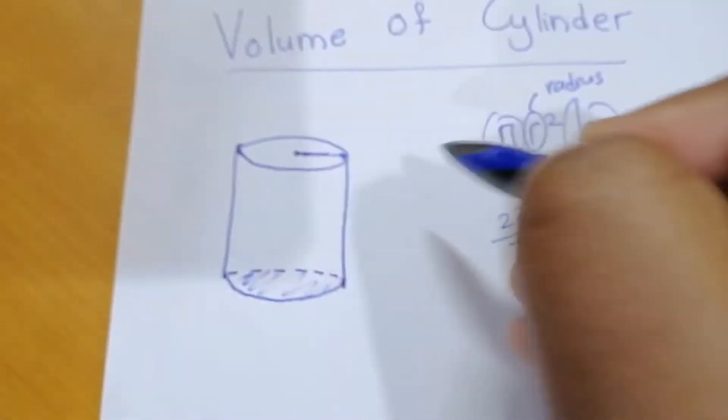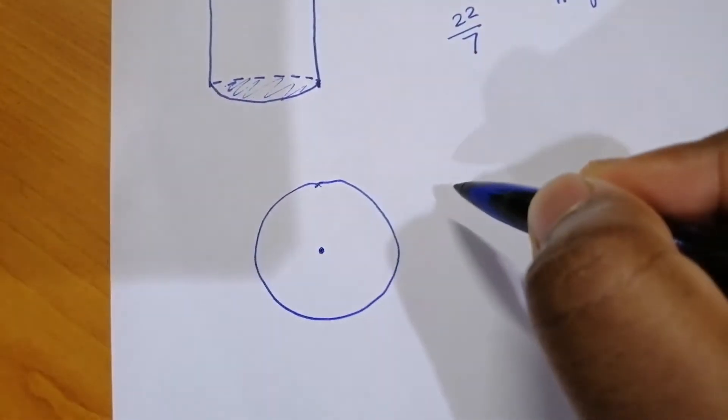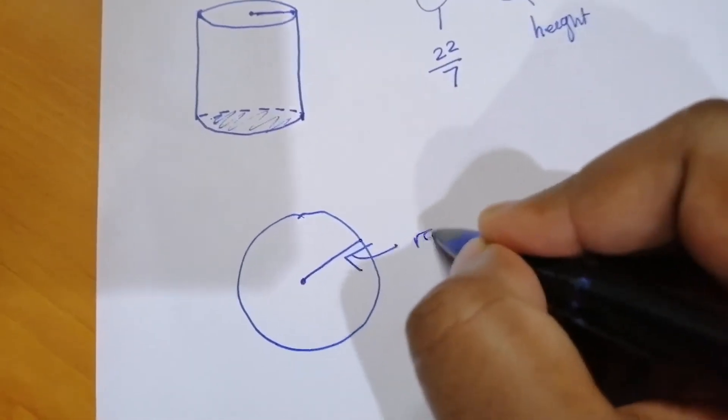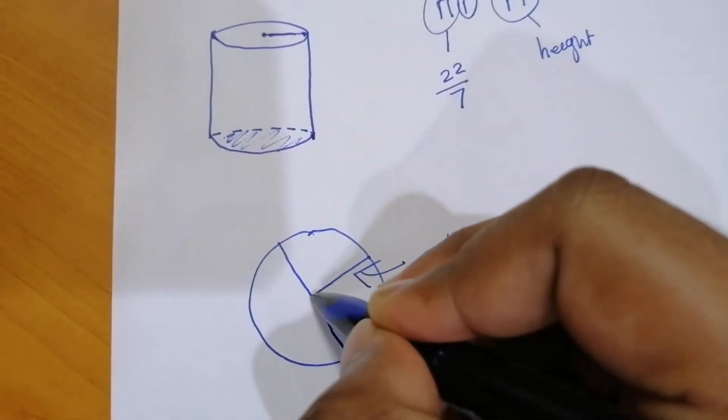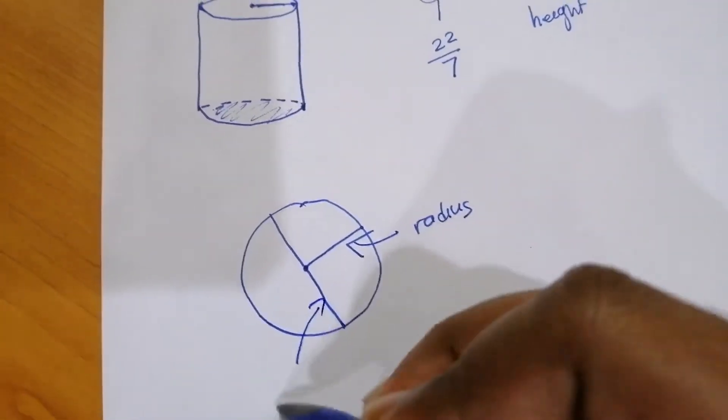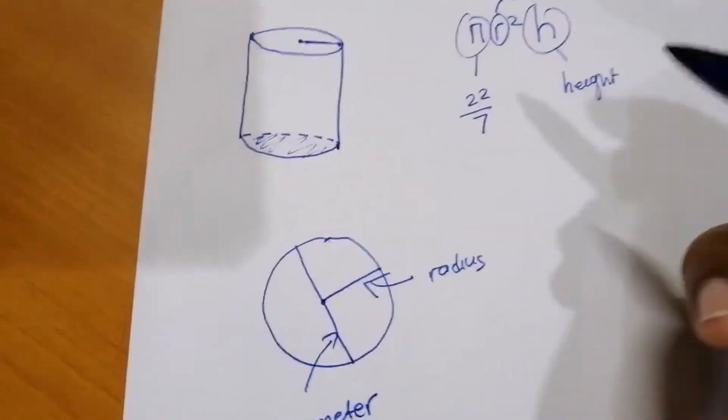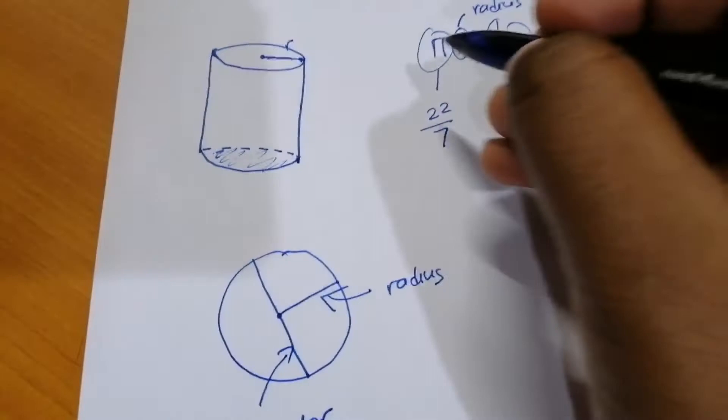In a circle, this is the center point. This is the radius. If the line is straight and long, we call that diameter. Now we want to find the radius, so this is the radius of this cylinder.